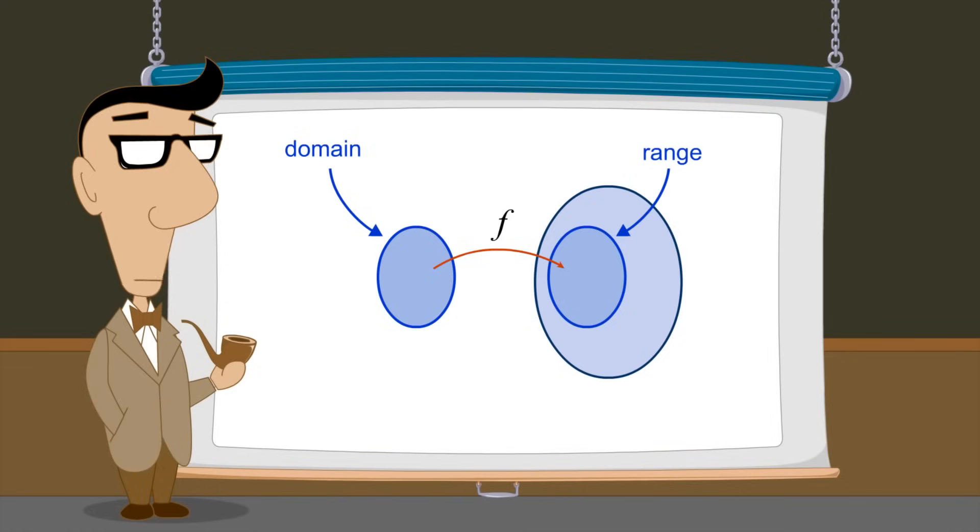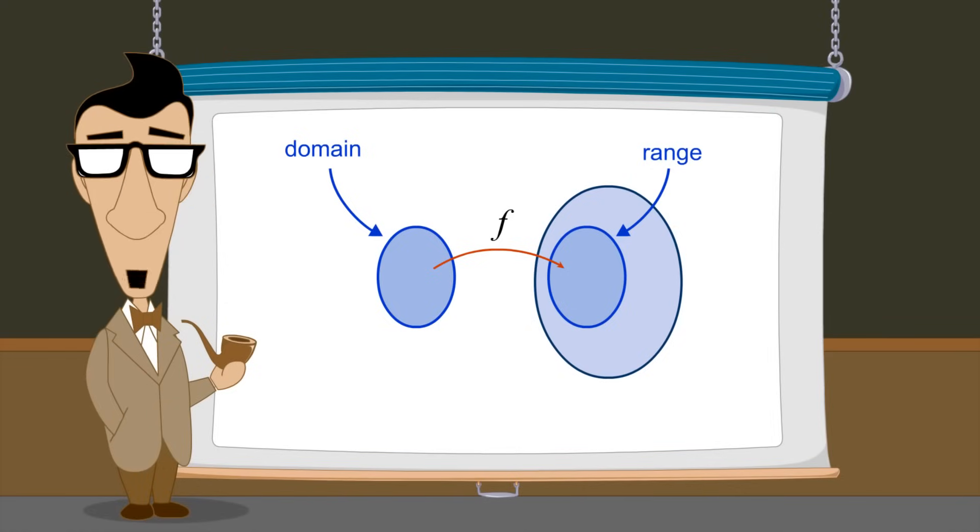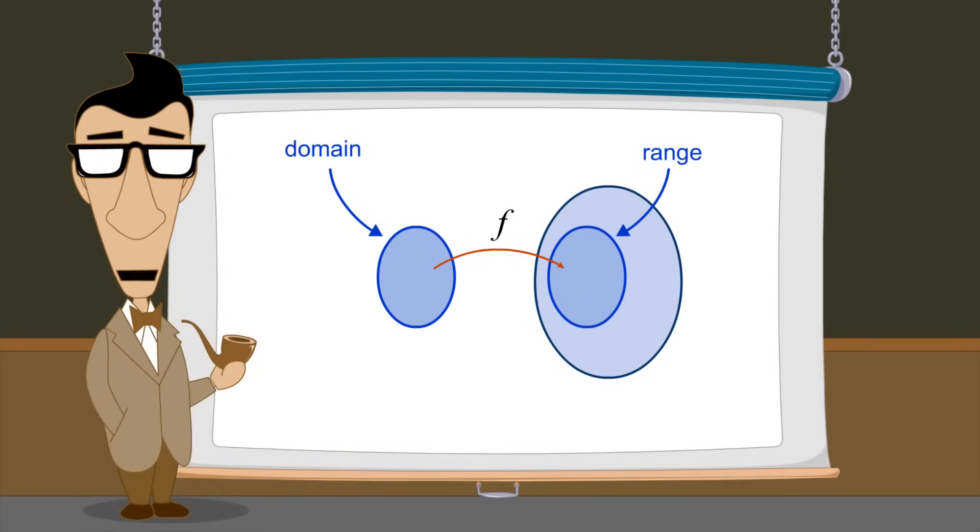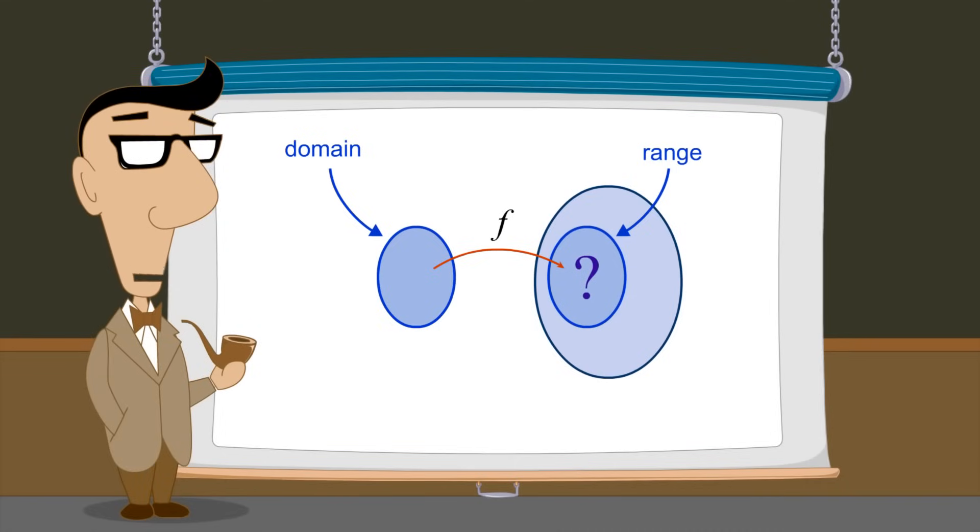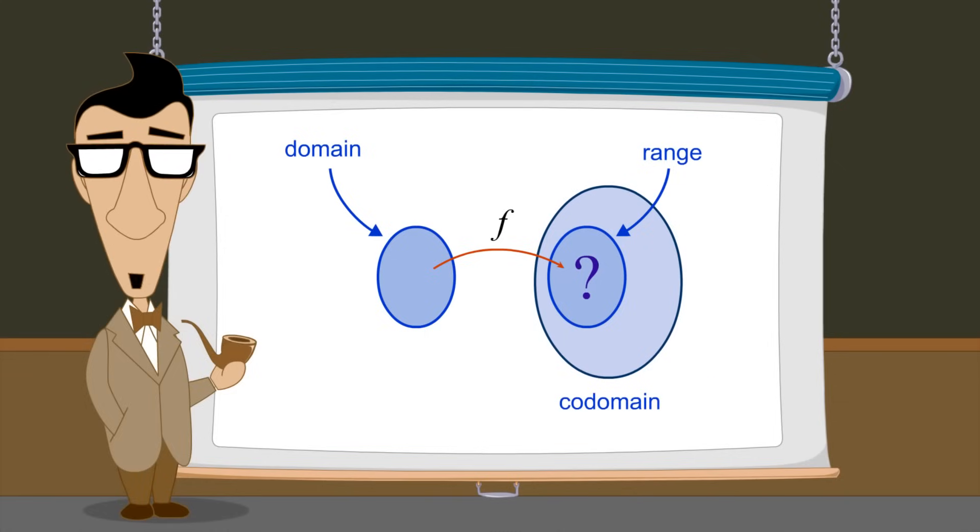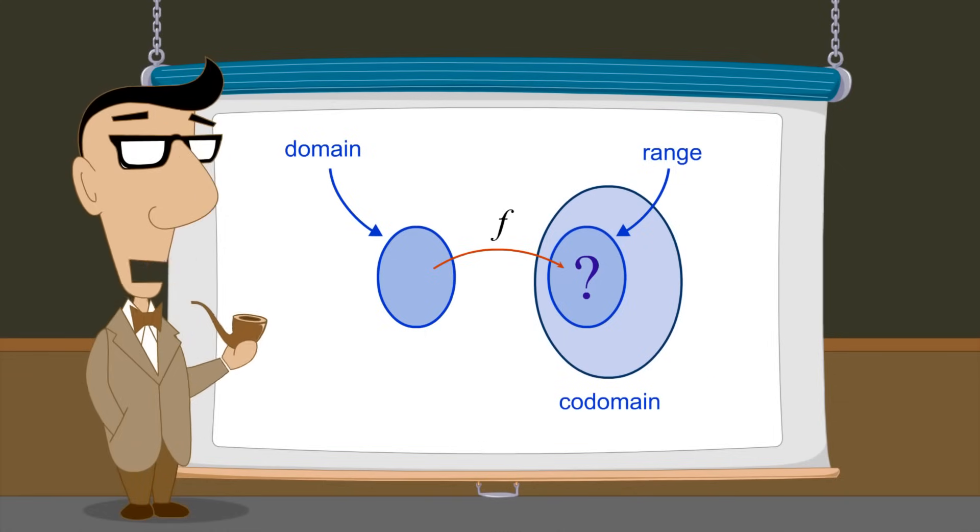For example, let's say we are studying a function which produces numbers as its output. We may not know exactly which numbers are produced, so we don't know the function's exact range. But if we know that they are all real numbers, we can say that the range is contained in R, the set of real numbers. The set which contains the range is called the co-domain of the function, and so the range is always some subset of the co-domain.